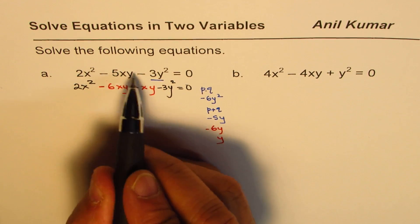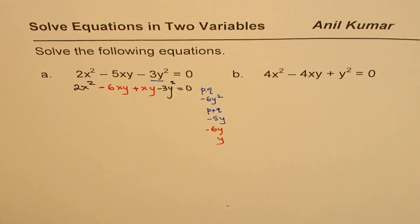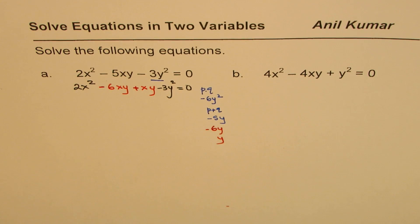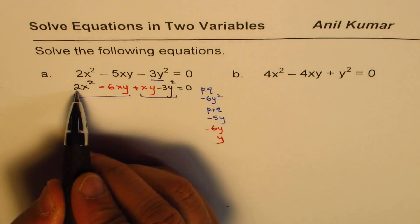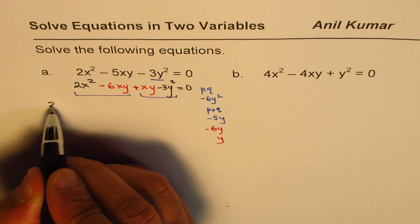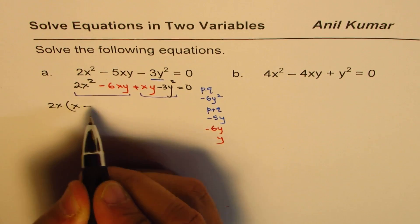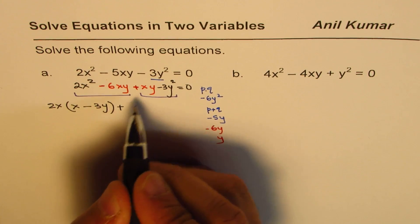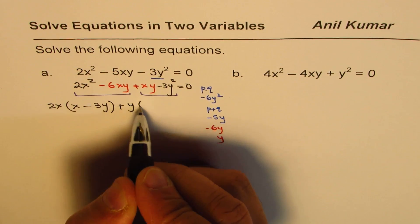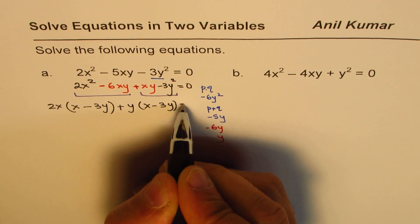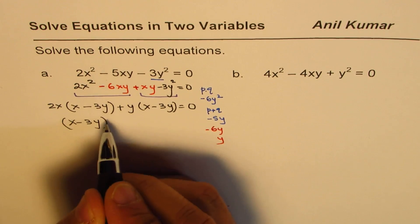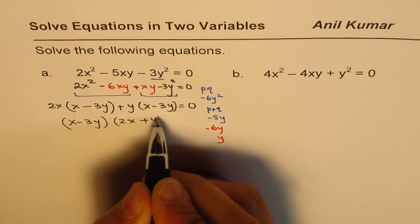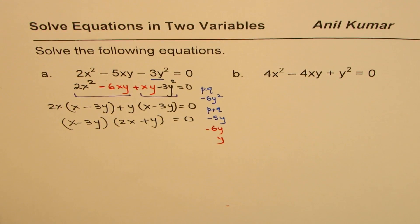So we'll split the middle term as we did for most of the factoring examples. And now you can combine the first two and the last two. What is common? 2x is common here. So we can say 2x and we get x minus 3y. In this case, y is common and we get x minus 3y equals to 0. Now x minus 3y is common. So we write x minus 3y. We're left with 2x plus y equals to 0. So that is the factored form.